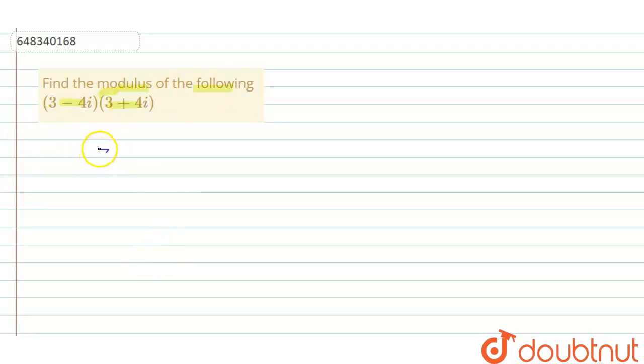As we know, if there is a complex number z equals x plus iota y, the modulus of z will be equal to square root of x squared plus y squared.